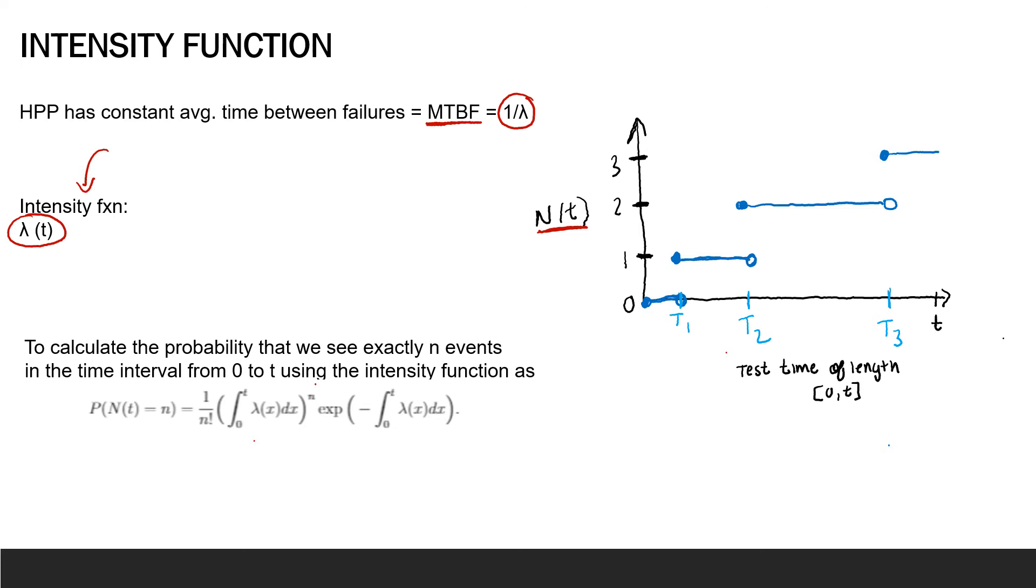Essentially, if we tested our system a lot of times and formed n of t curves for each test, we could then average all of them and have an estimate of the expected number of cumulative failures by time t for the system. And we call this capital lambda of t. So this capital lambda of t is an estimate of the expected number of cumulative failures by t. And this comes from averaging several n of t curves.